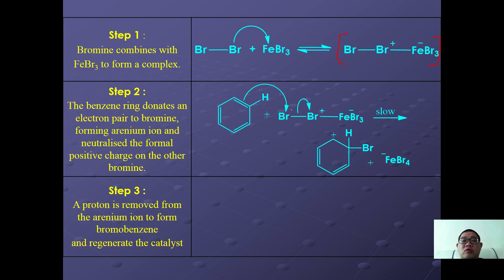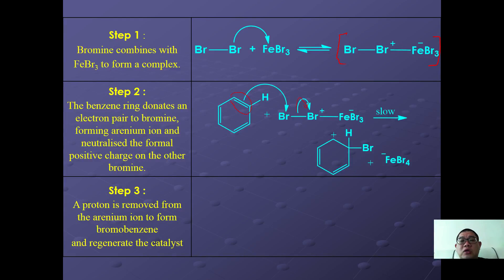In step two, the lone pair of electrons of the pi bond inside the benzene ring attacks the electrophilic complex. The pi electrons in one of the double bonds attack the bromine, which bears the partial positive charge, and heterolytic fission eventually takes place.